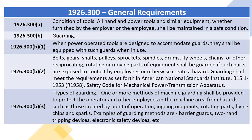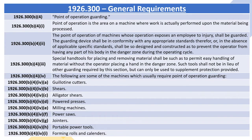1926.300(b)(3) Types of Guarding: One or more methods of machine guarding shall be provided to protect the operator and other employees in the machine area from hazards such as those created by point of operation, ingoing nip points, rotating parts, flying chips, and sparks. Examples of guarding methods are barrier guards, two-hand tripping devices, electronic safety devices, etc. 1926.300(b)(4) Point of Operation Guarding.